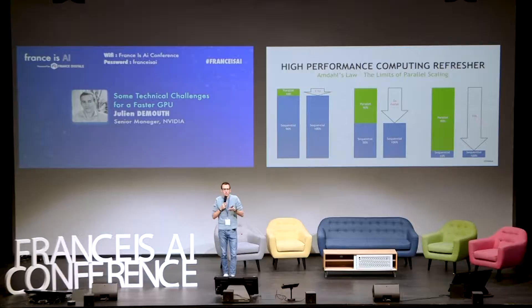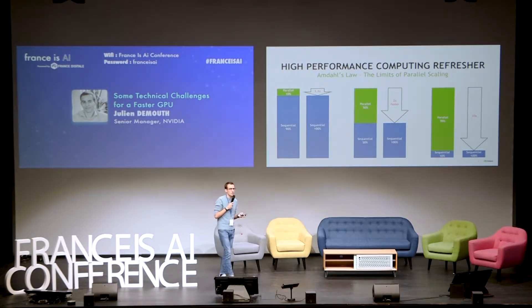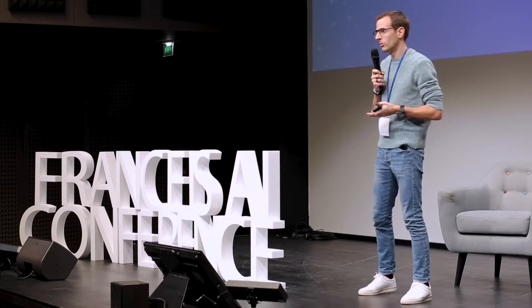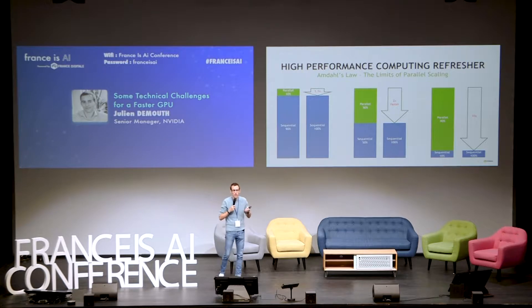If your original application has only 10% parallel sections, the best gain you can get is only 1.1x. If it's 50% sequential and 50% parallel, the best you can get is 2x. And if it's 90% parallel and 10% sequential, then you can go up to 10x. The reason I'm emphasizing this point is that when you consider deep neural networks, there are potentially a lot of parallel sections or compute-limited sections. It's fundamental that your applications are as parallel and as compute-limited as possible, because these are the parts that we can optimize.